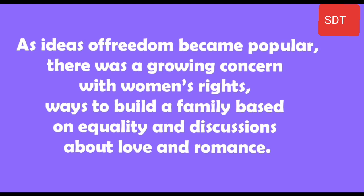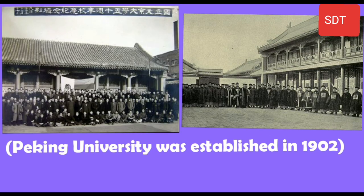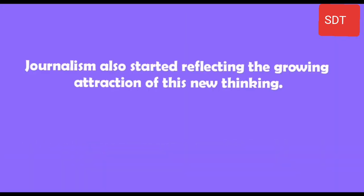As ideas of freedom became popular, there was a growing concern with women's rights, ways to build a family based on equality, and discussions about love and romance. Many schools and universities came up to help in social and cultural change. Peking University was established in 1902. Journalism also started reflecting the growing attraction of this new thinking.